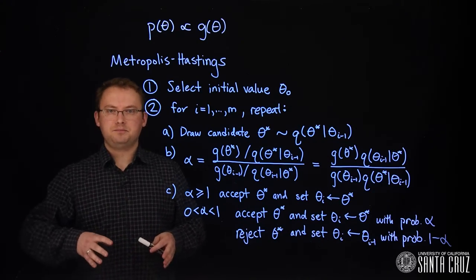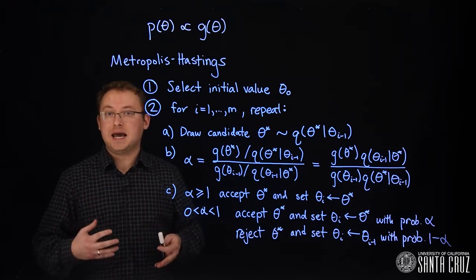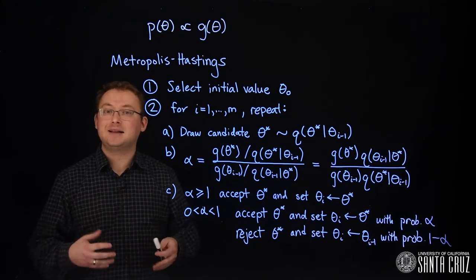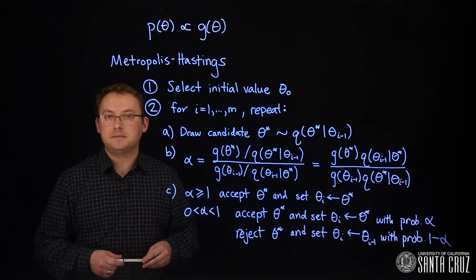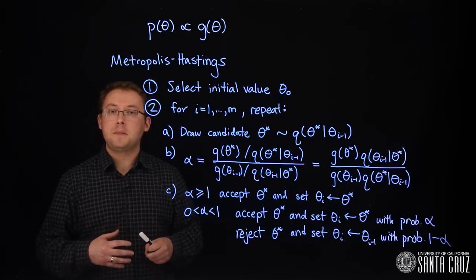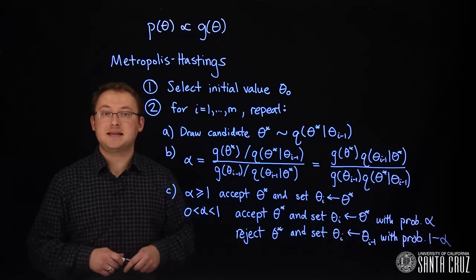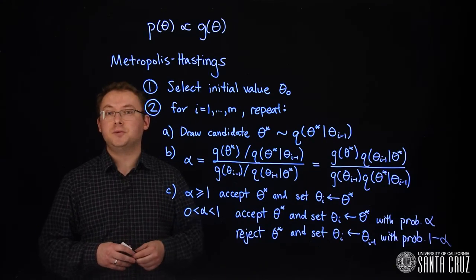In the next segment, we're going to demonstrate this algorithm in the discrete case where we can show mathematically that the Markov chain converges to the target distribution. In the following segment after that, we will demonstrate coding a random walk Metropolis-Hastings algorithm in R to solve one of the problems from the end of lesson two.